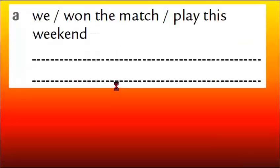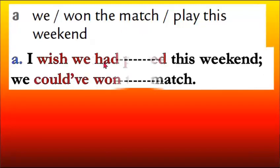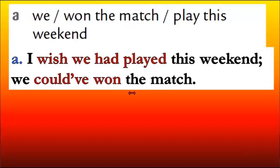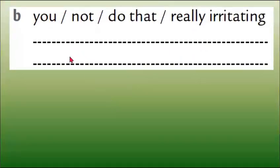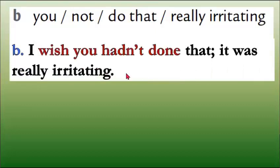The first one: 'We won the match — play this weekend.' The answer: 'I wish we had played this weekend — we could have won the match.' Sentence B: 'You not do that — really irritating.' Exactly: 'I wish you hadn't done that — it was really irritating.'